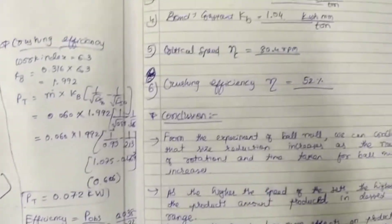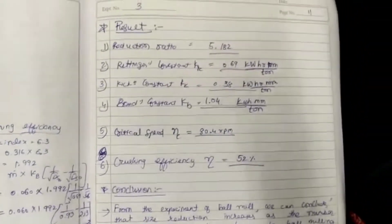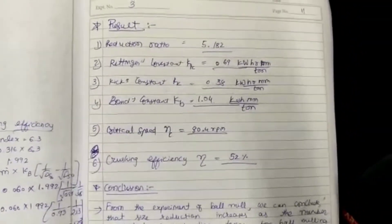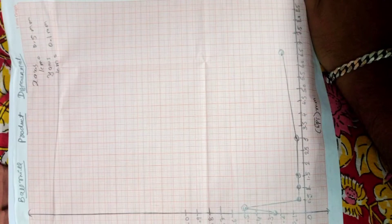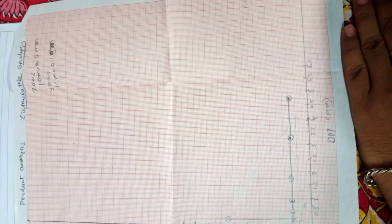We then plot the graph of mass fraction against average mean diameter for both the product and the feed analysis.